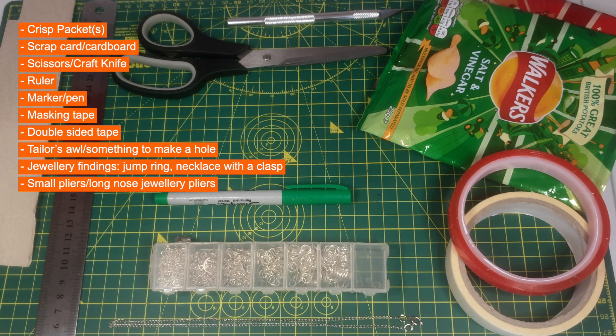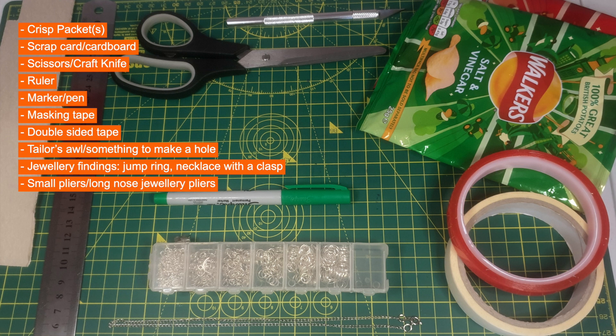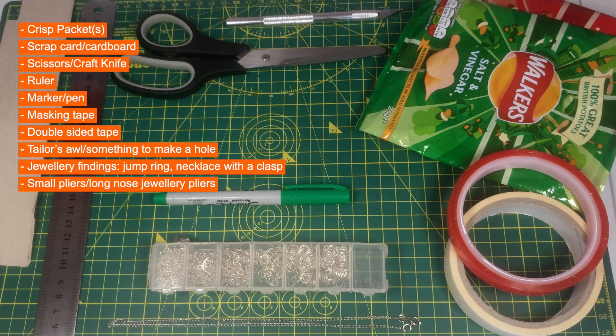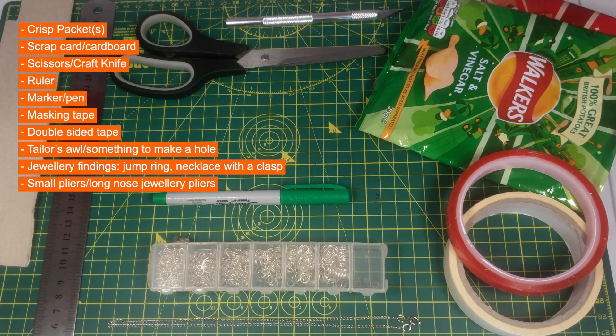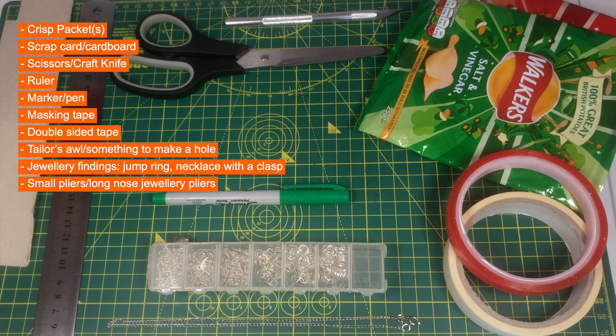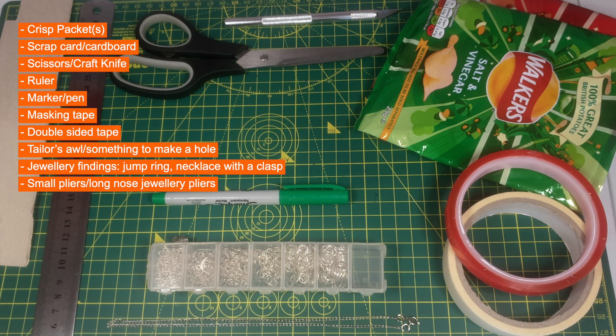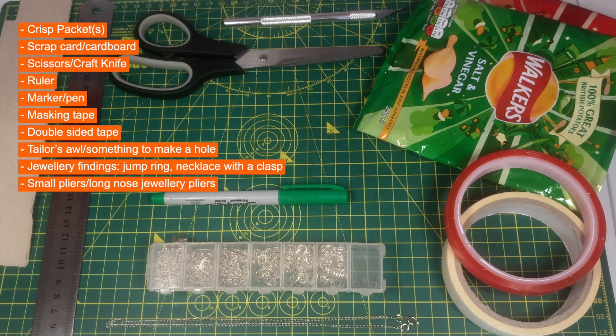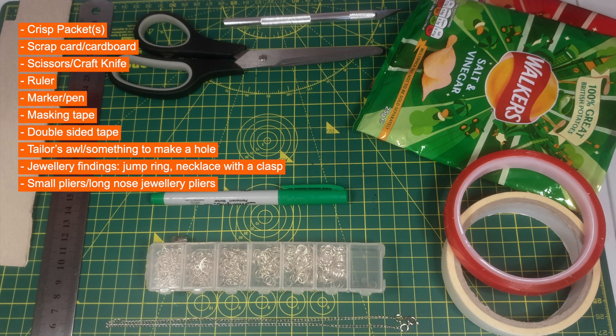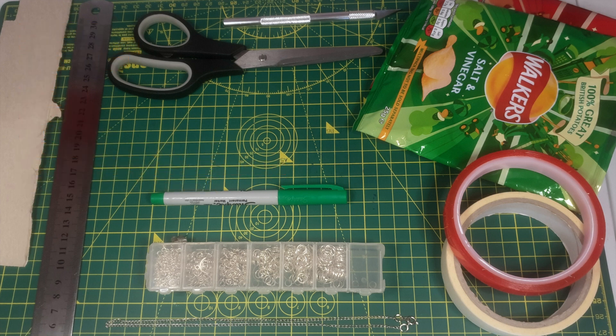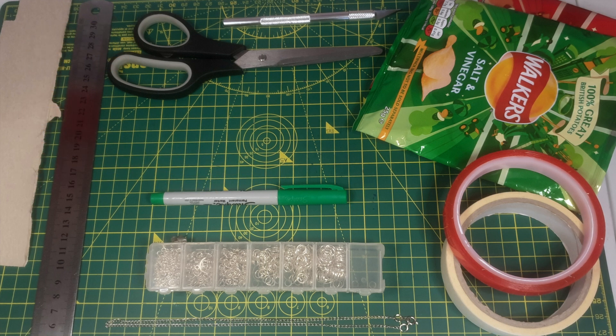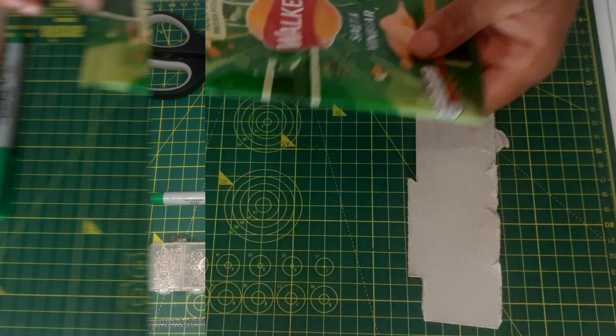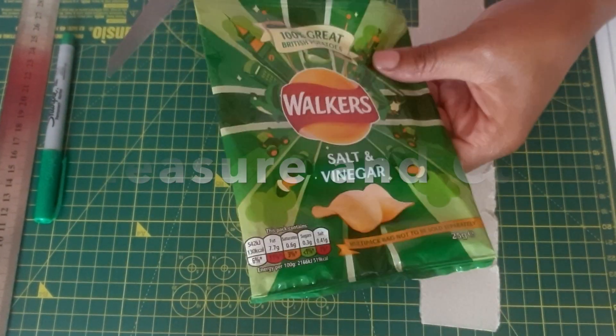You'll also need some scrap card or cardboard, scissors and or craft knife, a ruler, a marker or pen, some masking tape, double-sided tape, a tailor's awl or if you haven't got something as fancy as that something that can make a hole basically, and because we're making a necklace some jewelry findings so a jump ring, a necklace that maybe you already have and some clasps, and in terms of tools for the jewelry, small pliers or long nose pliers if you have one.